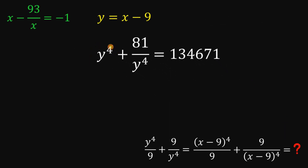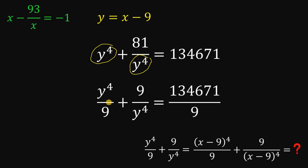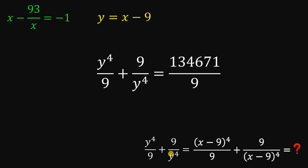Notice we have y raised to the fourth power and y raised to the fourth power in the denominator, but we need 9 instead of 81 on the denominator of y raised to the fourth power. So let's divide all terms by 9. That gives us y raised to the fourth power over 9 plus 9 over y raised to the fourth power, and the right-hand side divided by 9. Since 134,671 is not divisible by 9, this is its simplest form. Therefore, this is the value of y raised to the fourth power over 9 plus 9 over y raised to the fourth power.